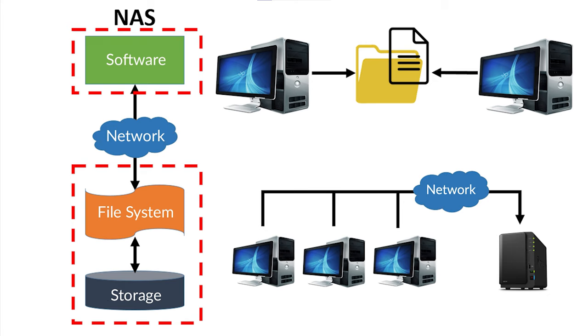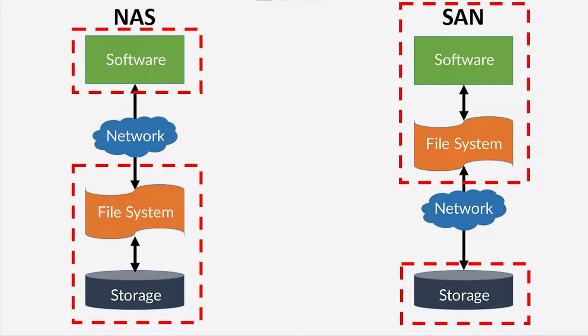So before you can make your choice, let's have a closer look at the difference between the two and at how they work. A network-attached storage is a device or server with a set of disks which is connected to a network. All members of such network can use the data stored on such device. The main difference from a conventional storage device connected directly to a computer is that, in the case of NAS, the operating system and other software are designed for the only purpose — storing data.